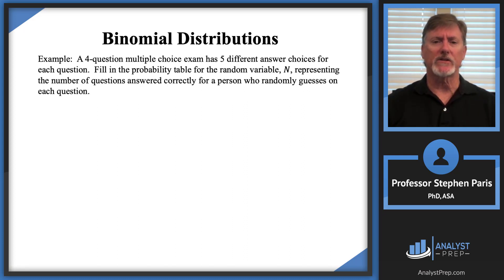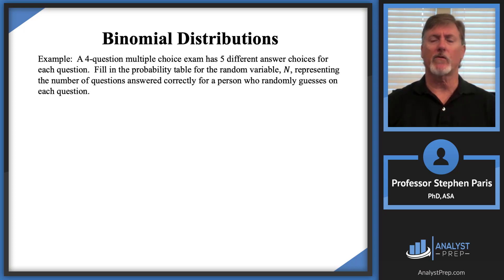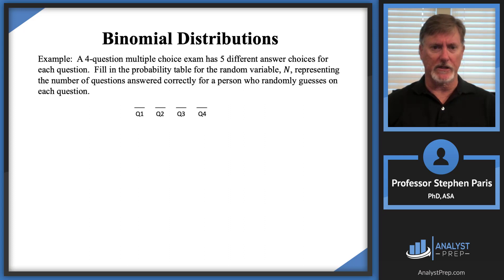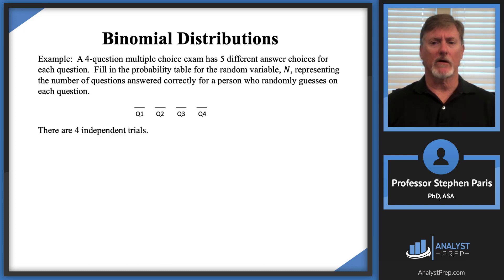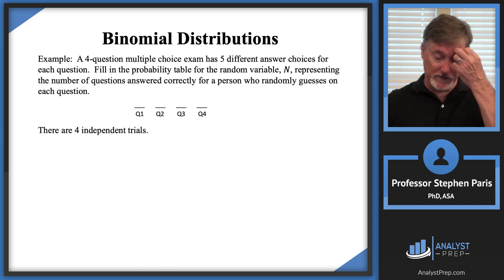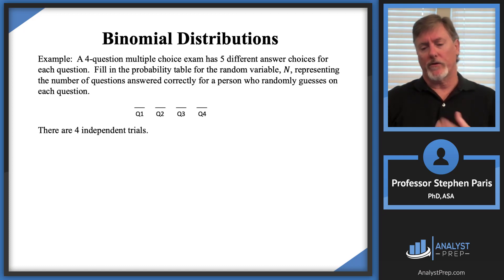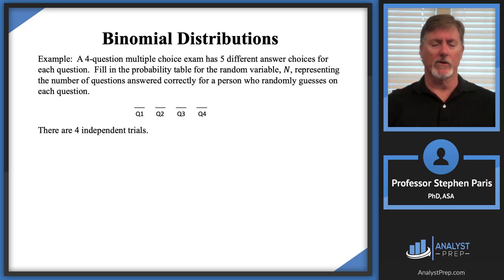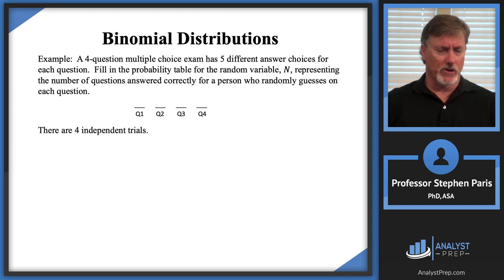Let's say that you have a four-question multiple choice exam. Each question has five different answer choices. We'll fill in the probability table for the random variable Cap N, representing the number of questions answered correctly for a person who randomly guesses at each question. There are four slots representing each question, and we're going to refer to these as trials — four independent trials.